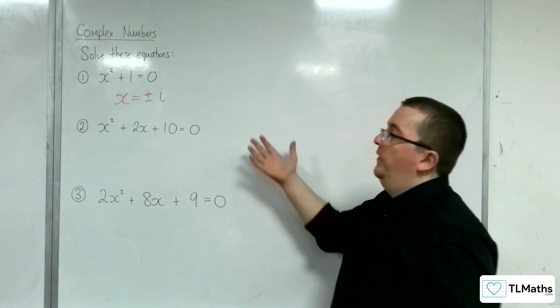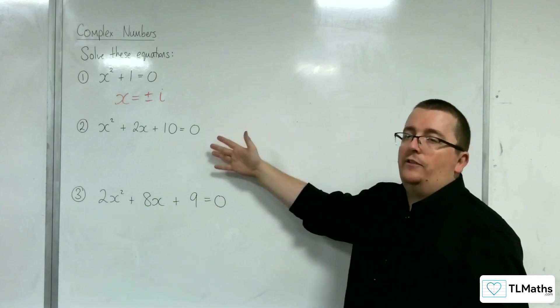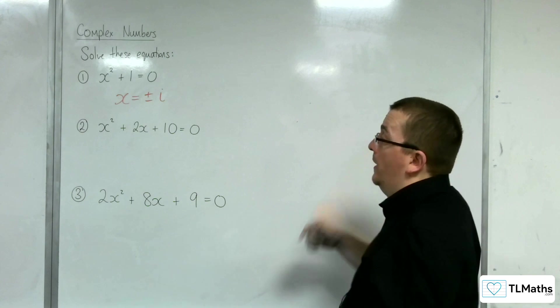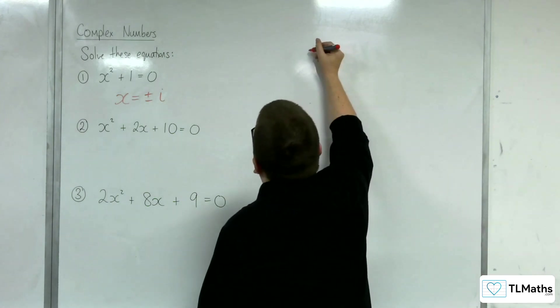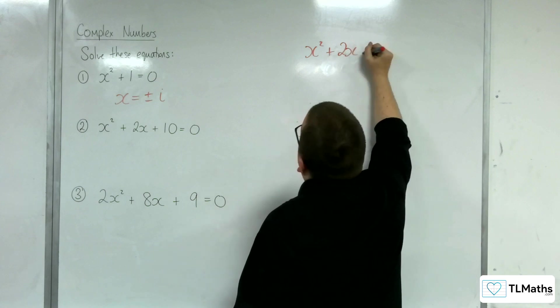Now, with the second one, of course, I can't rearrange that to get x equals unless I use completing the square. And that's the method I'm going to utilise. Because I can't factorise it.